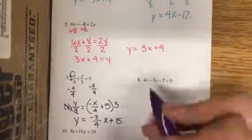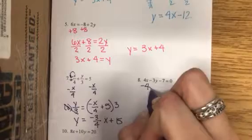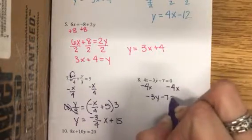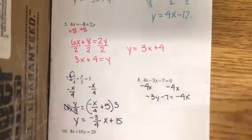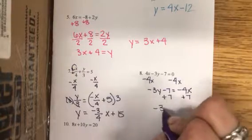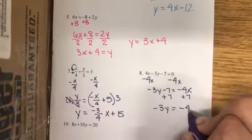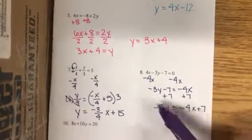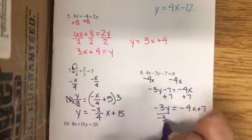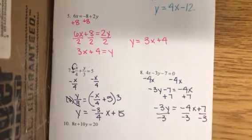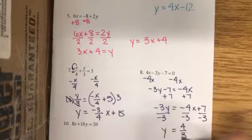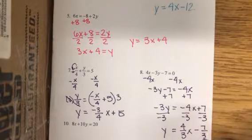Number eight: we're going to move the positive 4x by subtracting 4x, leaving us with negative 3y minus 7 equals negative 4x. We'll undo subtracting 7 by adding 7. Note: if you moved the 7 first and then the x, that's fine too — as long as you get them both moved over. Then we'll undo multiplication with division: two negatives make a positive, and a positive and a negative make a negative.